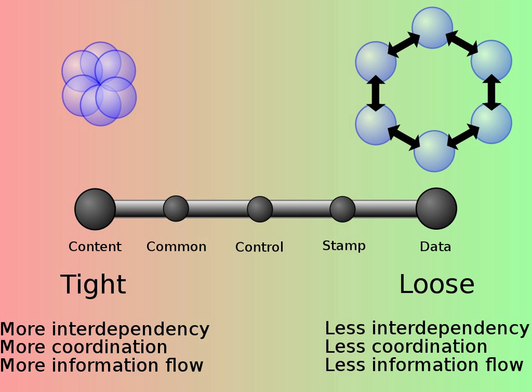Content coupling is said to occur when one module uses the code of other module, for instance a branch. This violates information hiding, a basic design concept.